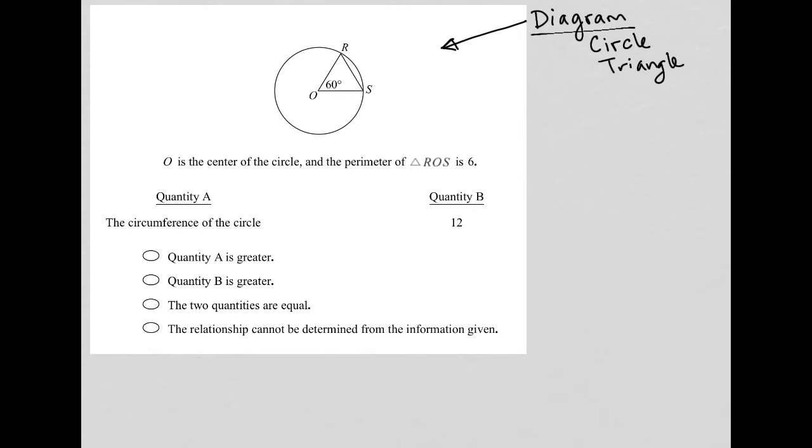I'm going to call a diagram question. So let's read the question and then let's follow the diagram strategy, which is to label the diagram with any given information along with any other relevant information that we can figure out based upon what was given.